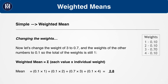Now imagine we change the weights. 1, 2, and 4 have a weighting of 0.1, or 10%, and 3 has a weighting of 0.7, or 70%. We can now plug this back into the weighted means formula, and you get the answer of 2.8.